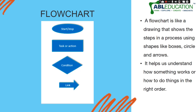An algorithm can also be represented using a flowchart. A flowchart is like a drawing that shows the steps in a process using shapes like boxes, circles, and arrows. As you can see here, there are oval shapes, rectangular shapes, diamond shapes, and arrow shapes — you remember all of these from class one and two. Inside these shapes we write commands; for example, inside the oval shape we write 'start' or 'stop'.